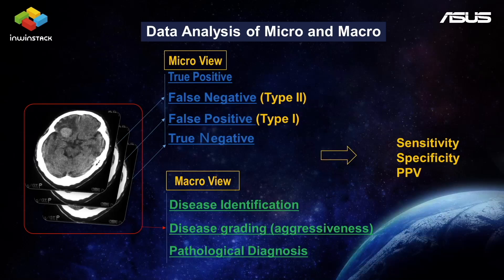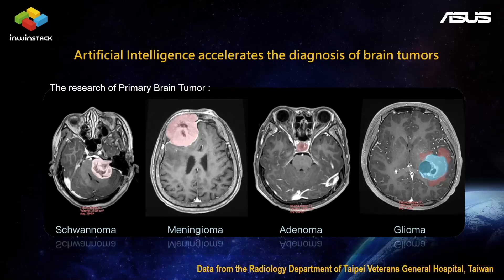On the other hand, in the macro view, we care more about the result of disease identification, disease grading, and pathology diagnosis. All these things can be transferred to sensitivity and PPV. Here is a real clinical practice case — we cooperate with the Radiology Department of Taipei Veterans General Hospital in Taiwan for primary brain tumor research, developing deep learning methods for brain tumor identification, localization, and tumor grade judgment, with ability to separate meningioma, schwannoma, adenoma, and granuloma.